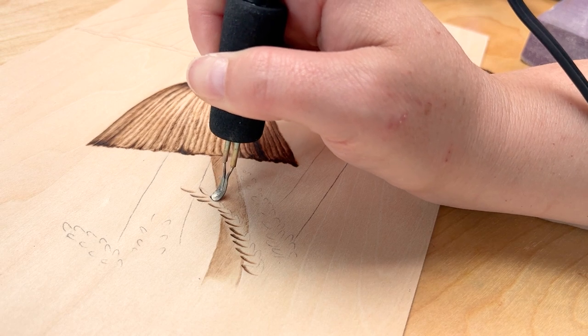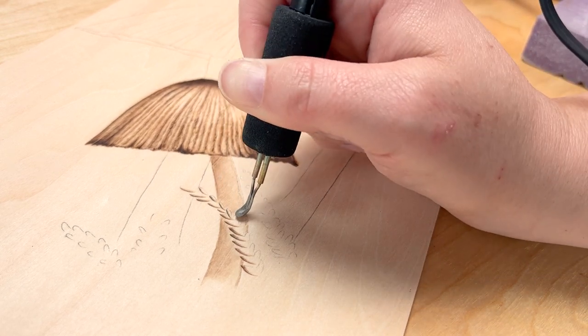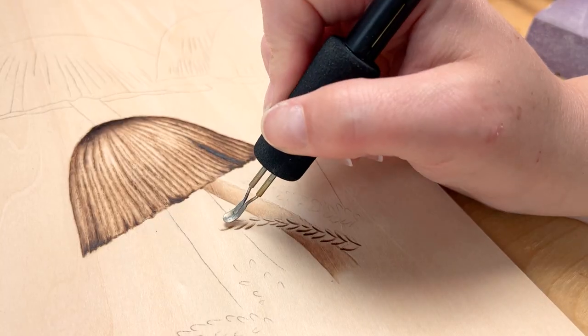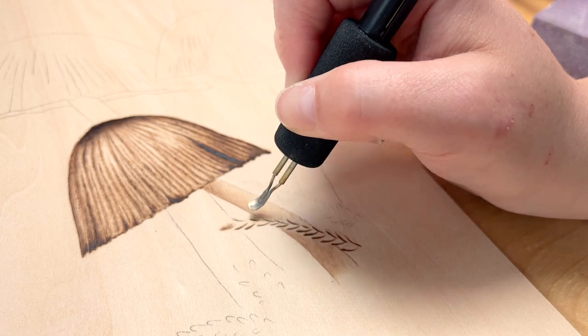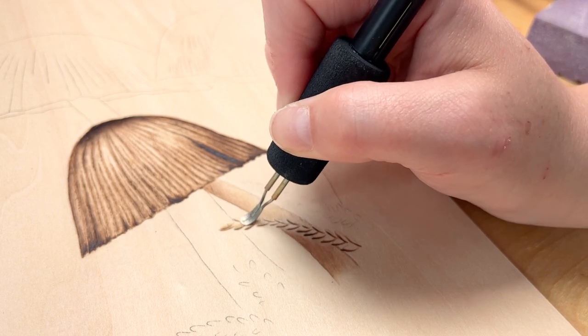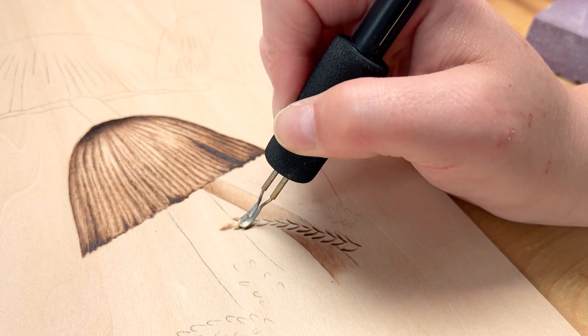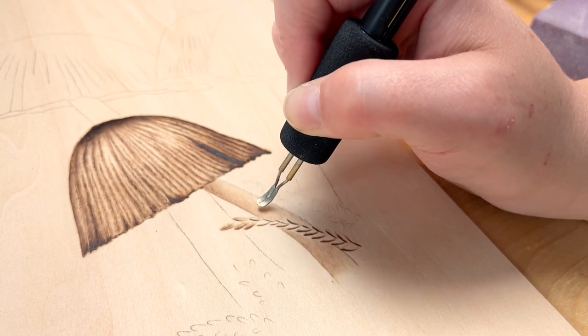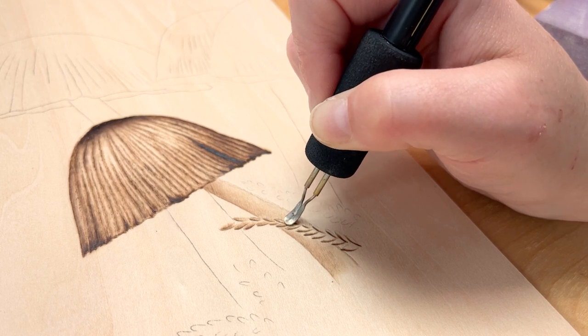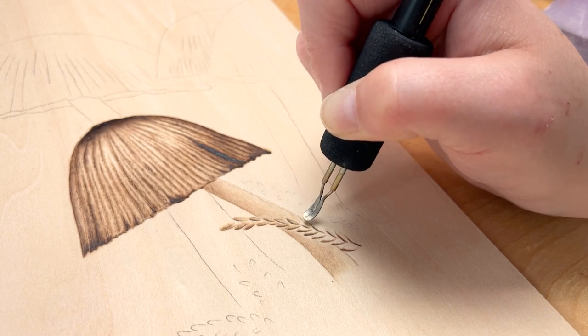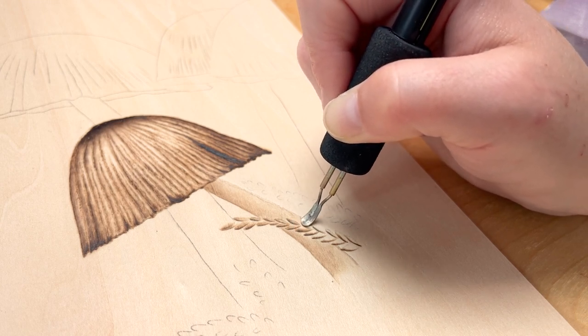Now I want to show you how I'm burning these leaf details. These leaves are like little bits of grass, but the photo's so close up they kind of look like tiny little leaves. I'm burning a darker underside and then a lighter top side. That just gives the illusion of a little bit of depth, a little roundness there.